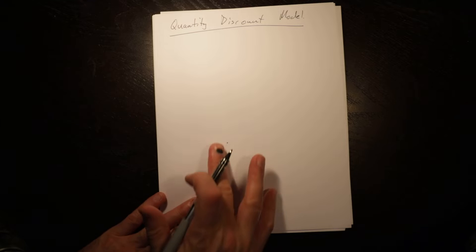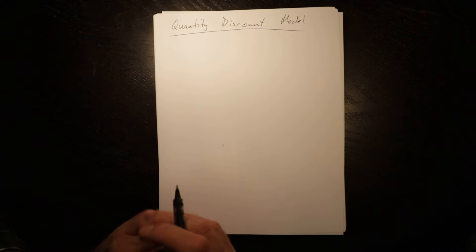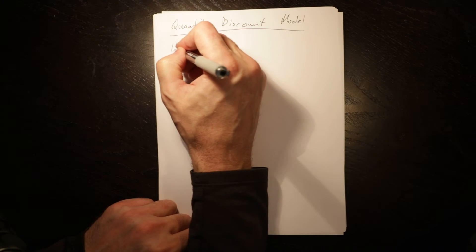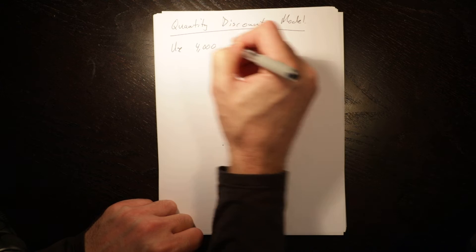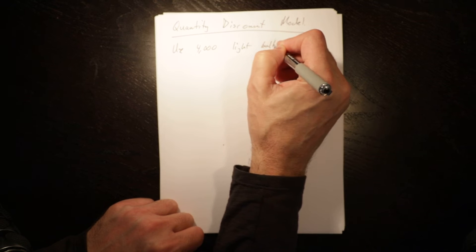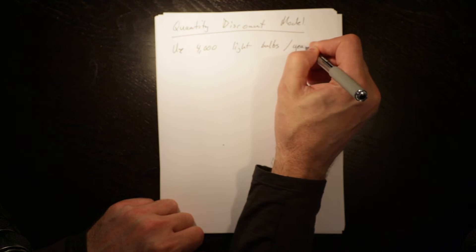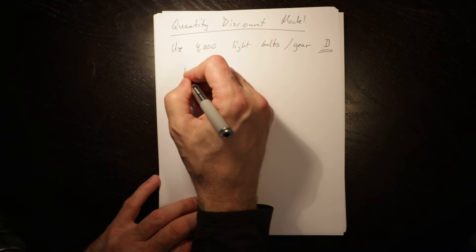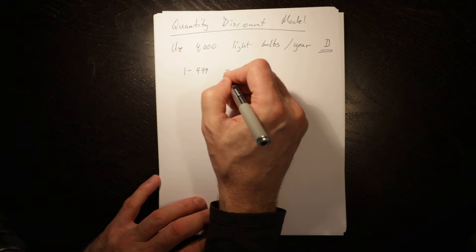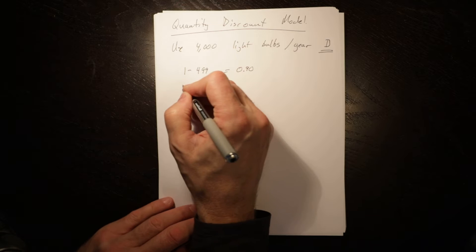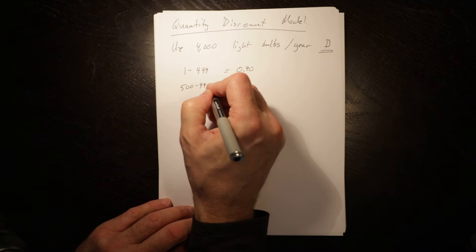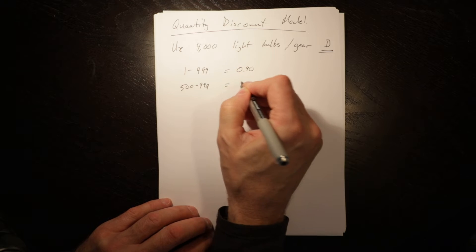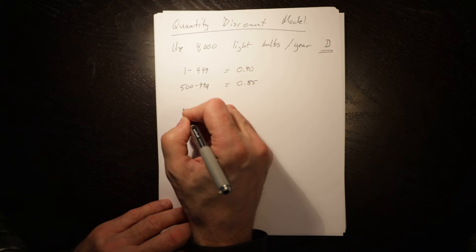Let's look at an example. You're a company; you use 4,000 light bulbs per year, that's D. If you order 1 to 499, they cost you 90 cents. If you order 500 to 999, they cost you 85 cents. And if you order more than a thousand, they cost you 80 cents.